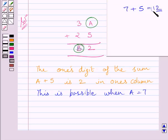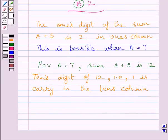The tens digit of 12, that is 1, is carry in the tens column. For A equal to 7, sum A plus 5 is 12. The tens digit of 12, that is 1, is carry in the tens column.